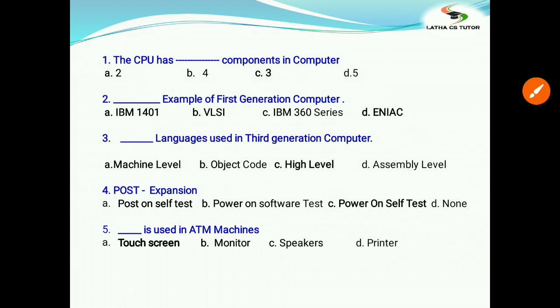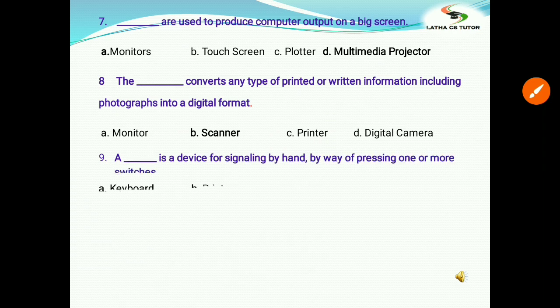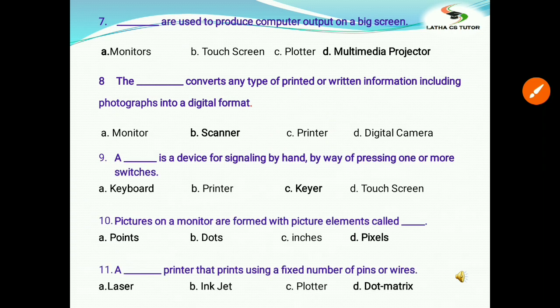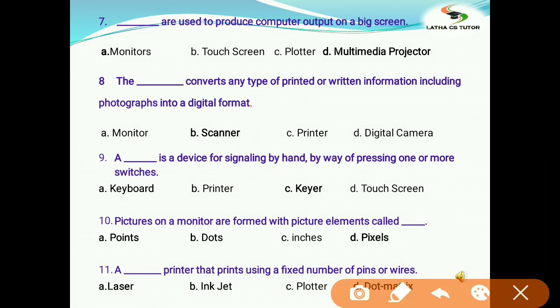Fifth question: What is used in ATM machines? Options: a) touch screen, b) monitor, c) speakers, d) printer. The correct answer is touchscreen. Identify the input device: a) printer, b) plotter, c) speaker, d) keyboard. As we know, printer, plotter, and speaker are all output devices. The correct answer is keyboard. Next question: What are used to produce computer output on big screen? Options: a) monitor, b) beta screen, c) plotter, d) multimedia projector. Right answer is multimedia projector.